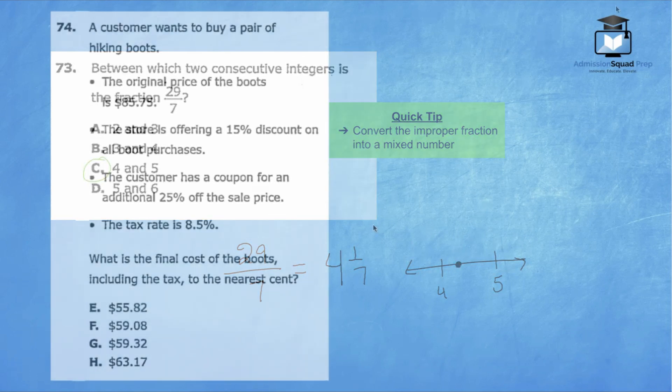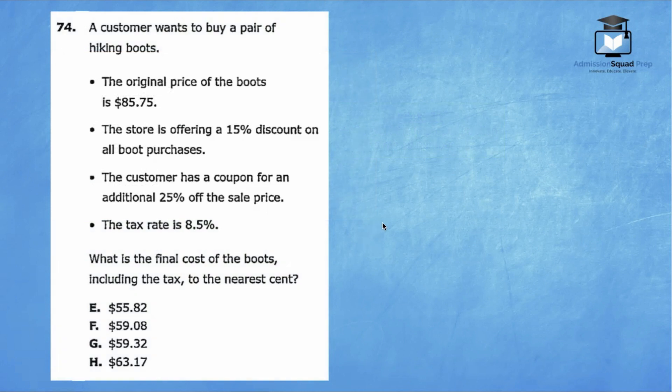Let's try out 74. For 74, a customer wants to buy a pair of hiking boots. I don't know how many of you guys have been hiking before, but those boots can definitely come in handy. The original price of the boots is $85.75. The store is offering a 15% discount on all boot purchases. The customer also has a coupon for an additional 25% off the sale price. And finally, you know, we got to pay some taxes. So the tax rate is 8.5%. So what is the final cost of the boots, including the tax to the nearest cent?